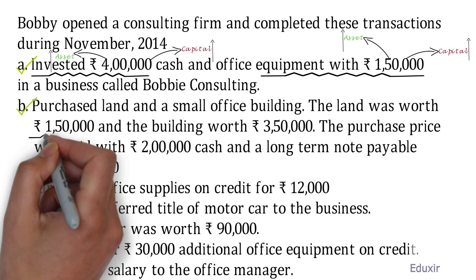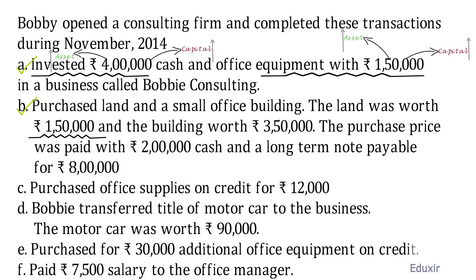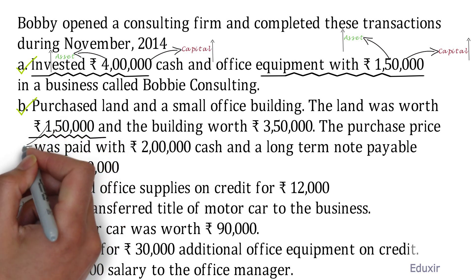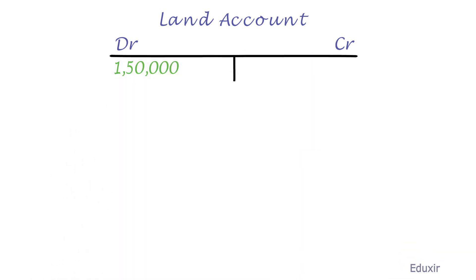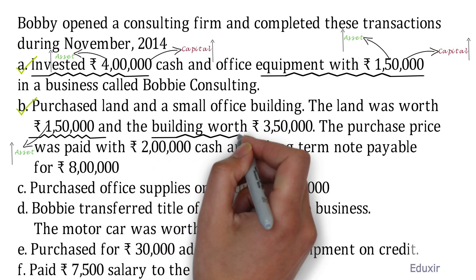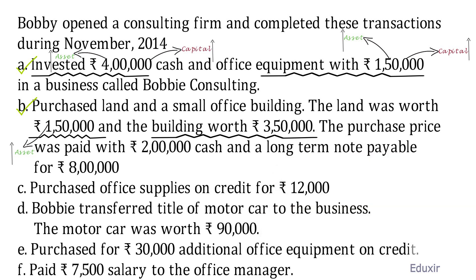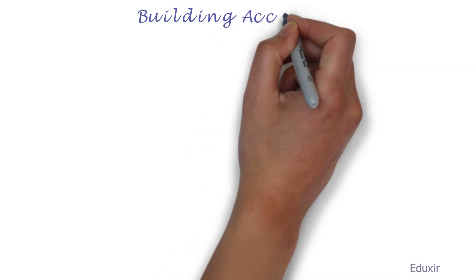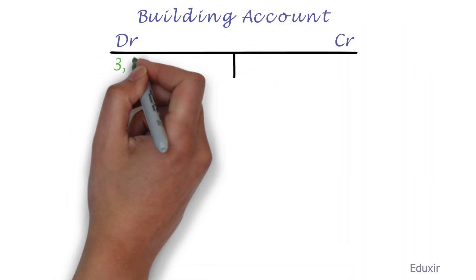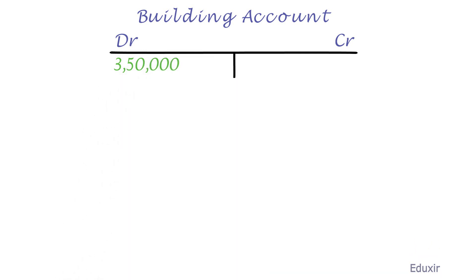Let us now tackle transaction B. A land worth 1 lakh 50 thousand rupees is purchased, increasing the asset named land. The rule is to debit the asset account, so we add 1 lakh 50 thousand rupees to the debit side of the land account. In addition, a building worth 3 lakhs 50 thousand is also purchased — this increases the asset named building. We debit 3 lakhs 50 thousand rupees on the debit side of the building account. Note that these transactions do not increase the capital, as these assets were not brought in by the owner but were purchased.